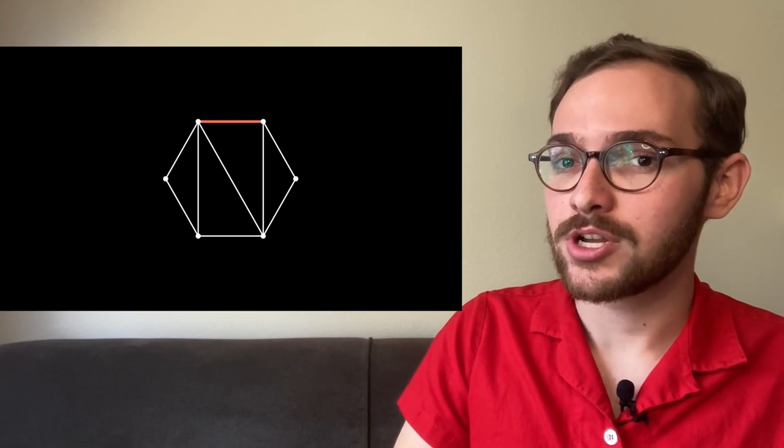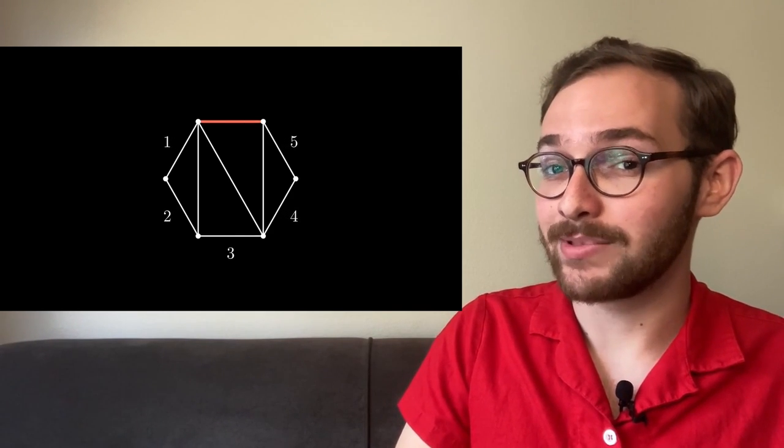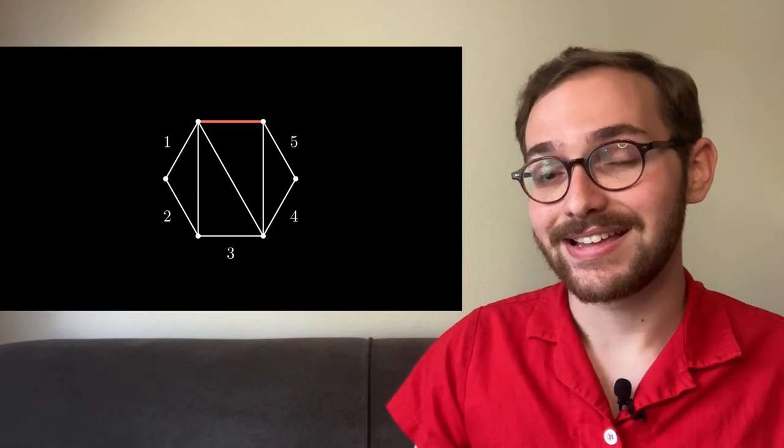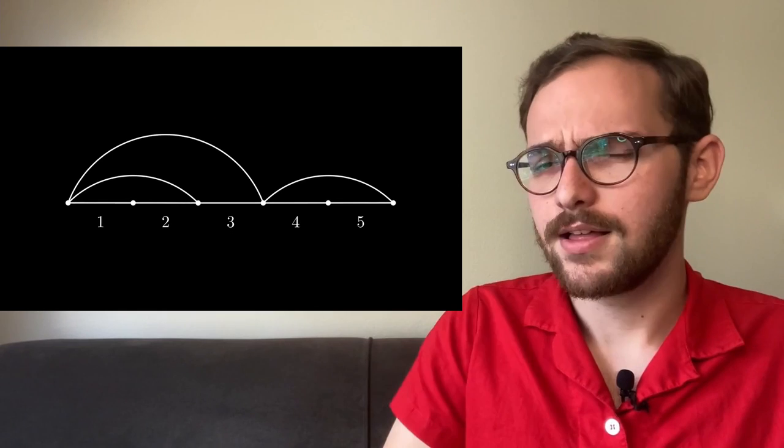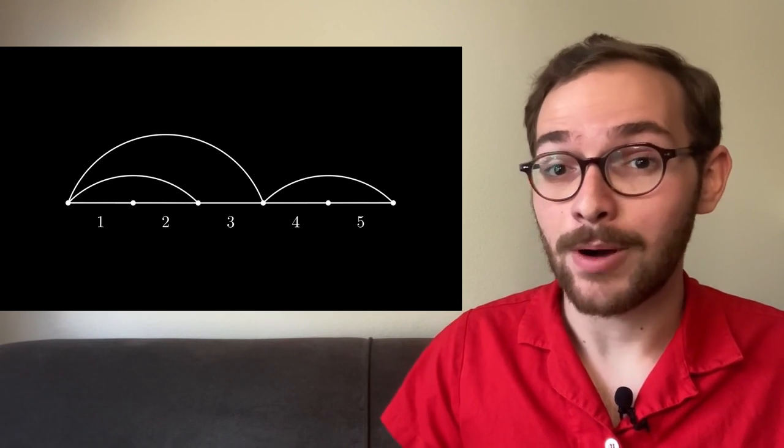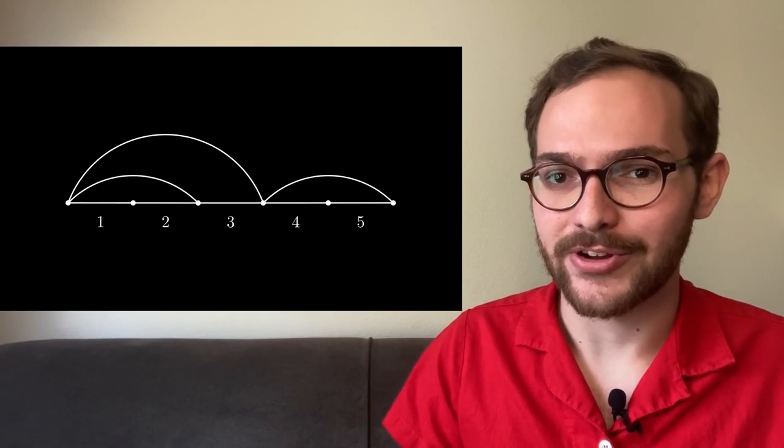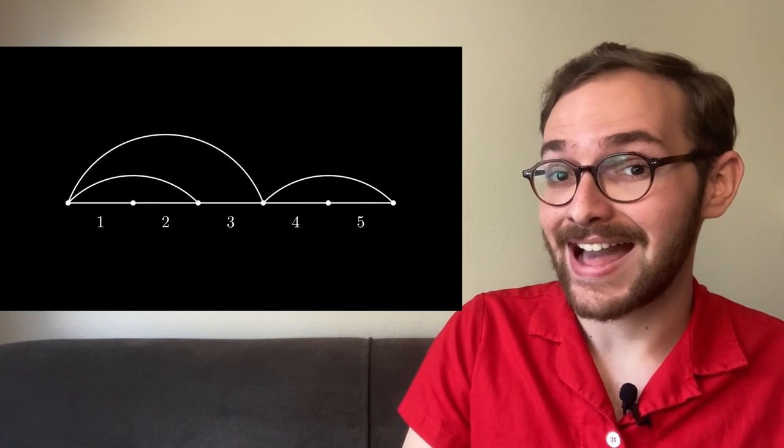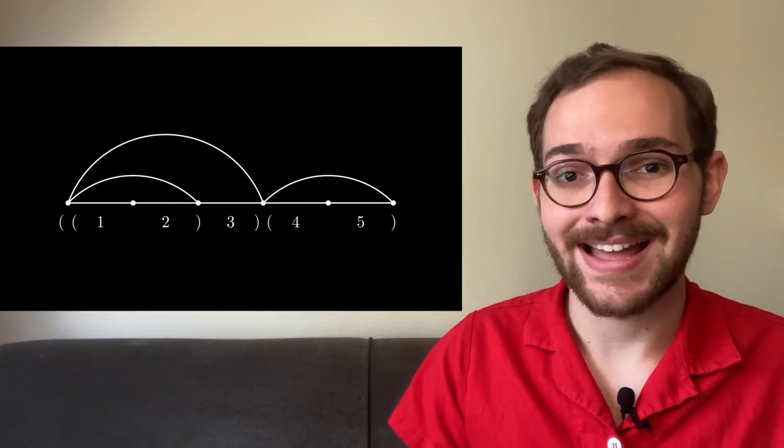Pick an edge and color it red. Starting after the red edge, go around counterclockwise labeling the remaining edges. Now stretch out the polygon so the edges lay flat. The triangulation is now a bunch of arcs grouping the edges together. The left edge of an arc acts like a left parenthesis and the right edge acts like a right parenthesis. And voilà, you have a parenthesization.